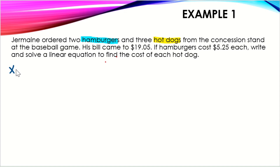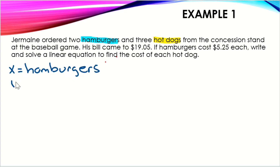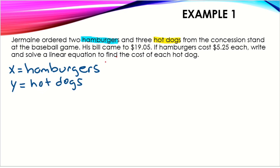The first thing we want to do is define our variables. I'm going to let X equal hamburgers — that's what I mean by defining variables: we assign a variable for each item. And I'm going to let Y equal hot dogs. You can use any variables; I just like to stick with X and Y. As long as you define which variable goes with which item, you're good.